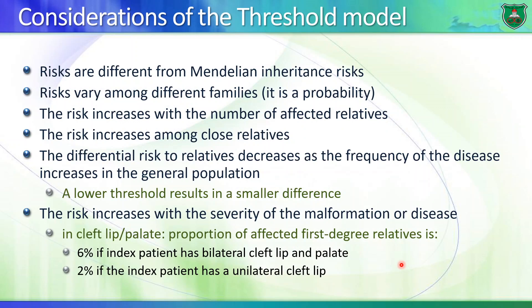Key considerations for the threshold model: the risk is different from Mendelian inheritance; risk varies among different families because the probability of collecting the required factors differs. One family may have a good chance of collecting all eight factors, while another family has a lower chance. The risk increases with close relatives, and the differential risk to relatives decreases as the frequency of the disease increases in the general population.